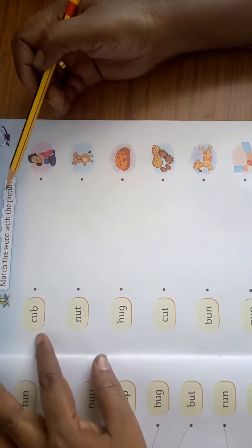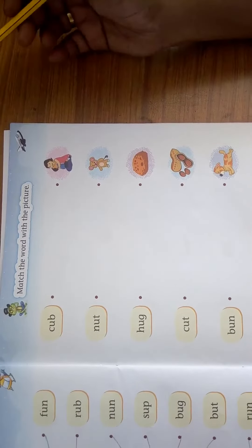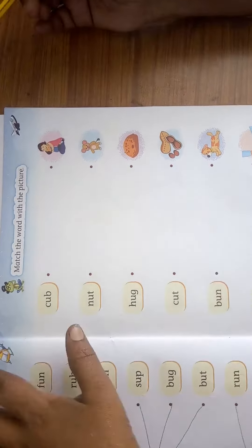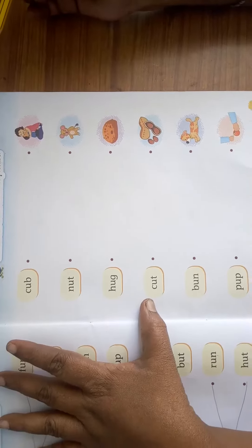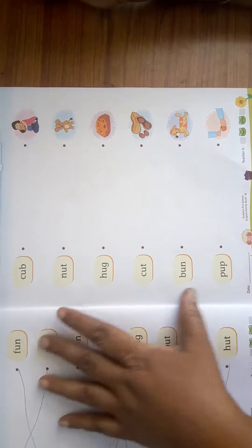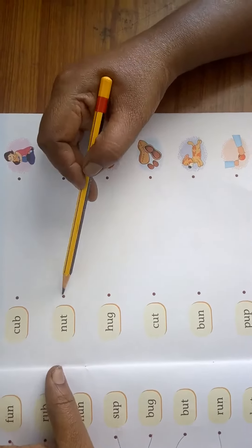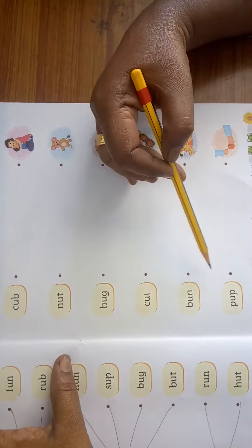You match the word with the picture. This is word to word and this is word with the picture. Where is the cub? Where is the nut? Where is the hug? Cut, bun, pup. Cup, nut, hug, cut, bun, pup.